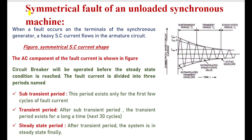When a symmetrical fault occurs on the terminals of an unloaded synchronous generator, a heavy short circuit current flows in the armature circuit. The short circuit current waveform has both a DC component and an AC component. The circuit breaker operates before steady state condition is reached.